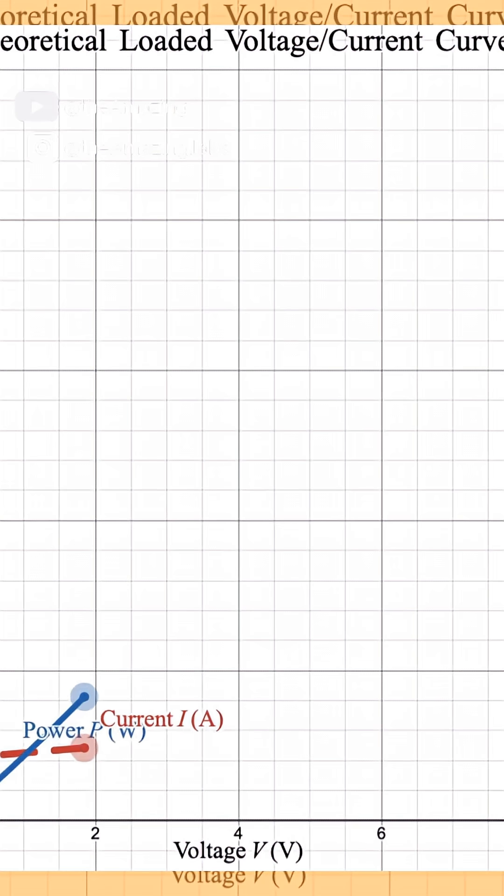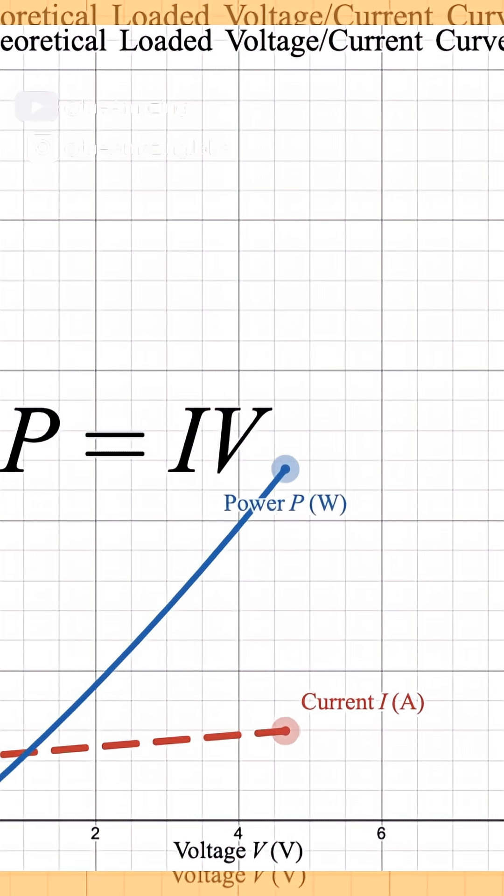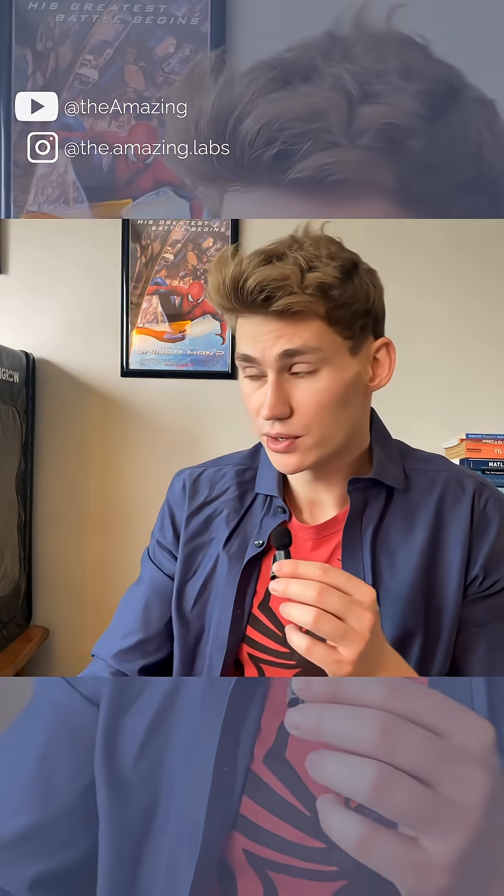Theoretically, once we have this robot walking, we should see the current increase as the voltage increases. Because it's moving faster, the robot is accelerating up and down faster. We should see more load on the motors, more current being drawn. So the first test that I want to do with these robots is find the loaded voltage current curve.